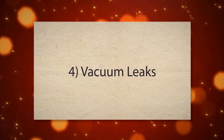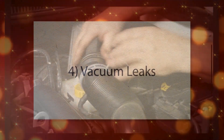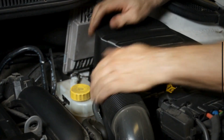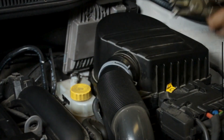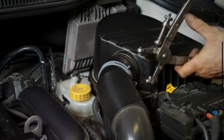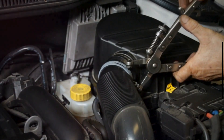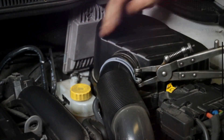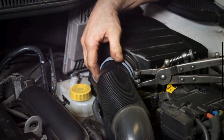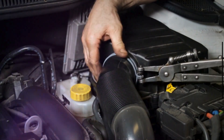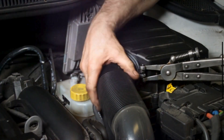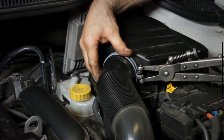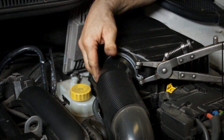The fourth cause is vacuum leaks. Engines rely on a precise air-fuel mixture for efficient combustion. Vacuum leaks allow unmetered air to enter the intake manifold, disrupting this balance. A vacuum leak near Cylinder 2 can cause the air-fuel mixture to be too lean and lead to a misfire.